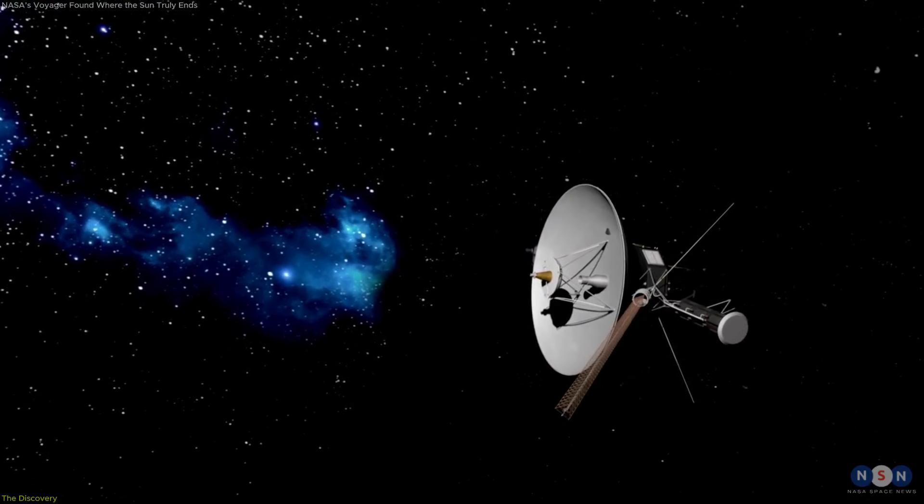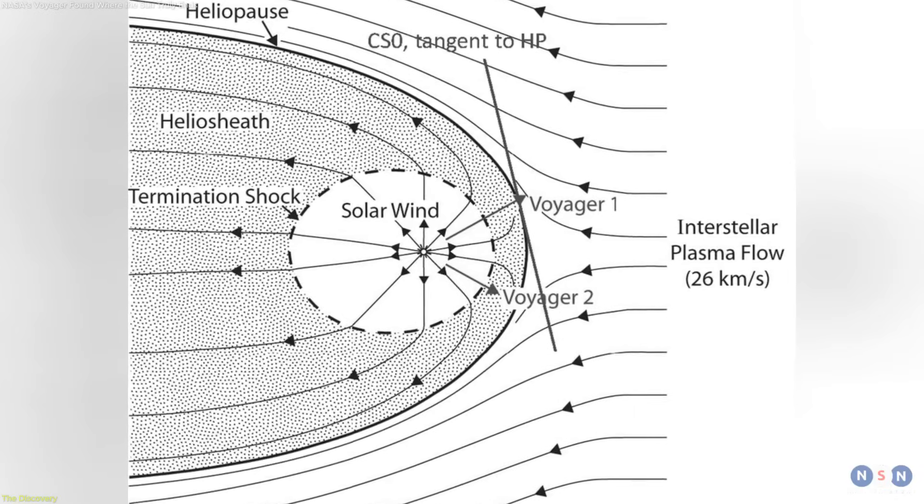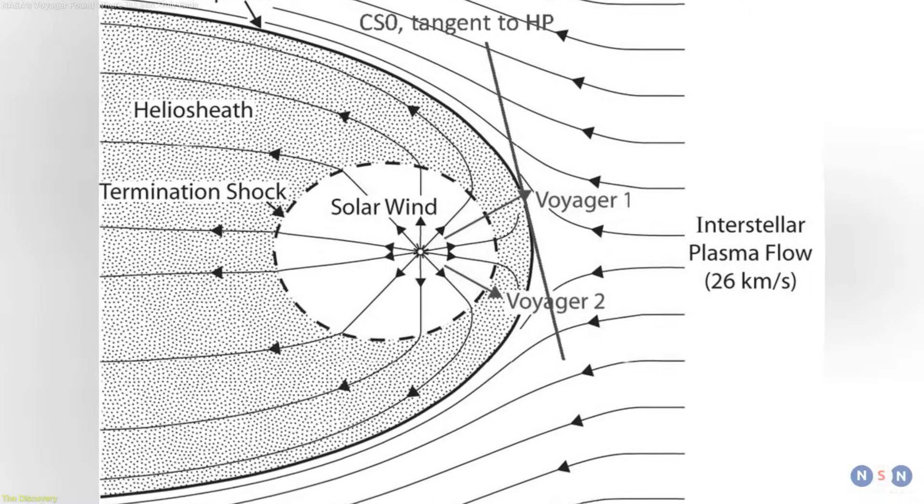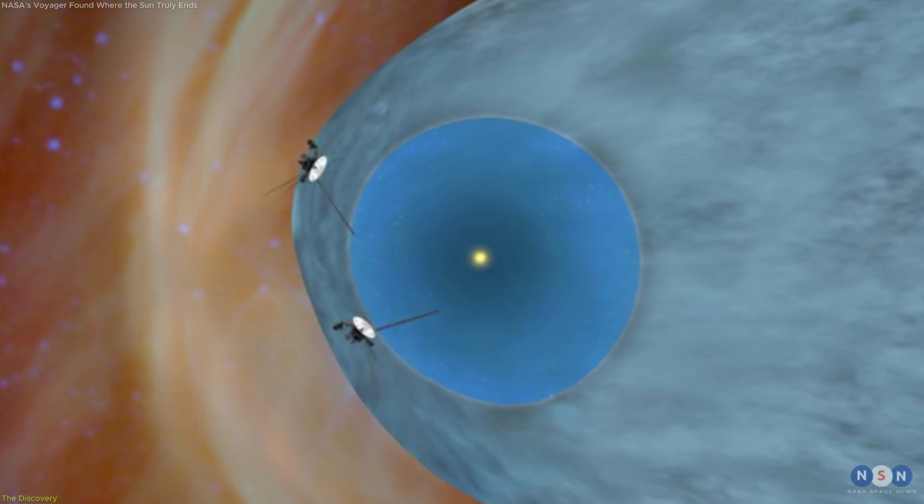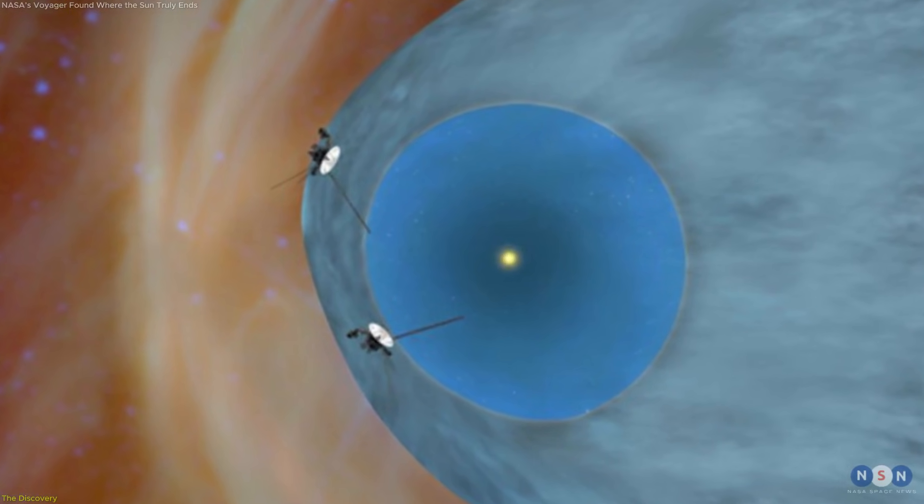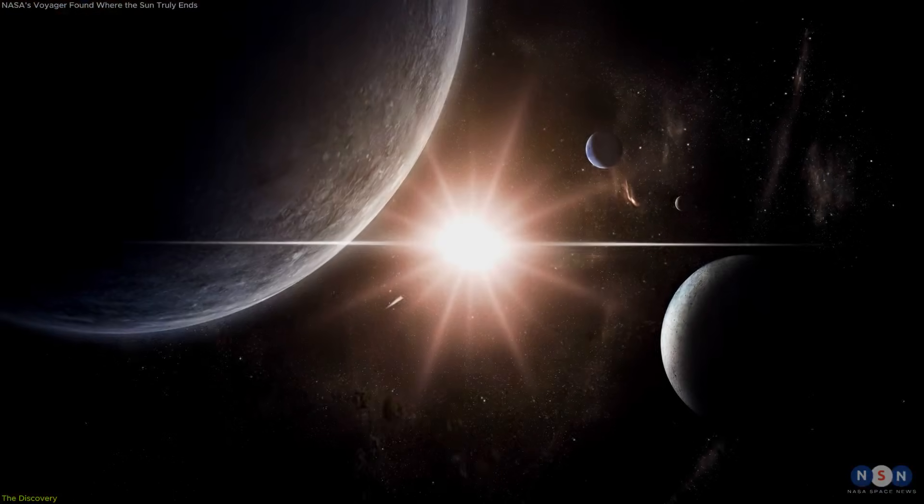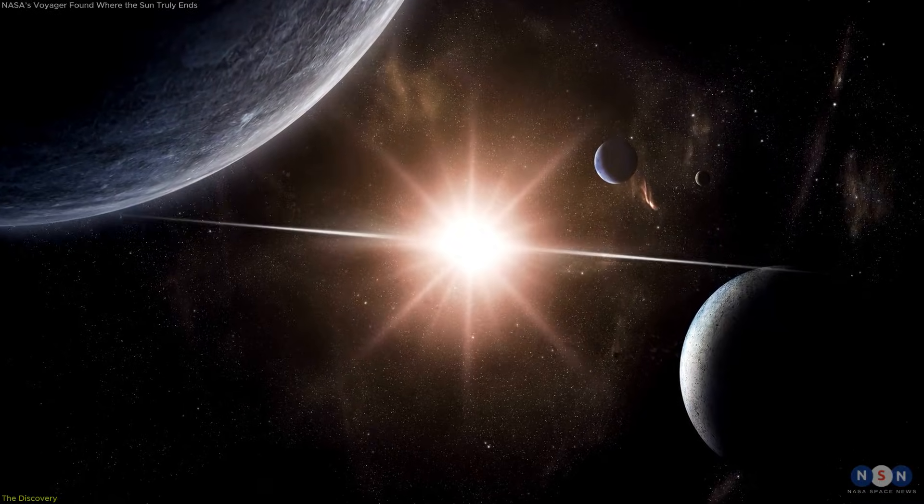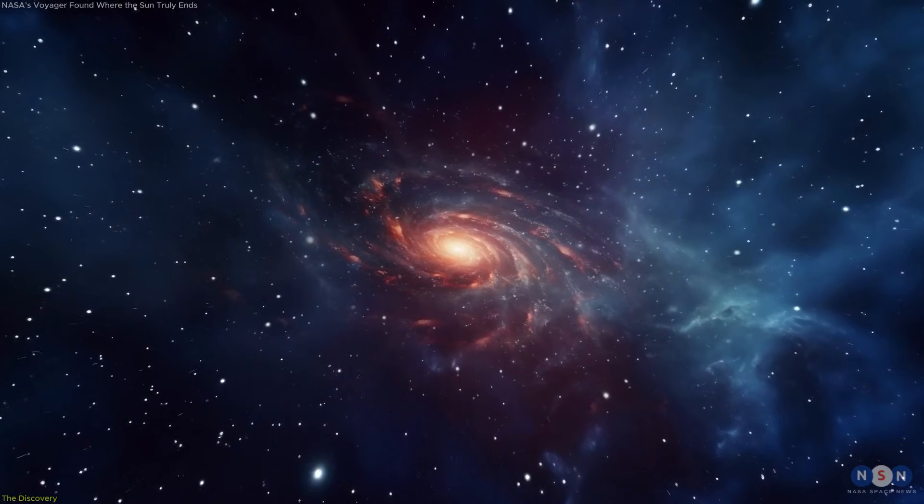These measurements turned the heliopause into something more than a conceptual boundary. It is now understood as a physical structure with measurable properties, including thickness, temperature, and magnetic behavior. For the first time, scientists were able to directly observe how a star's influence fades and how the surrounding galaxy takes over.